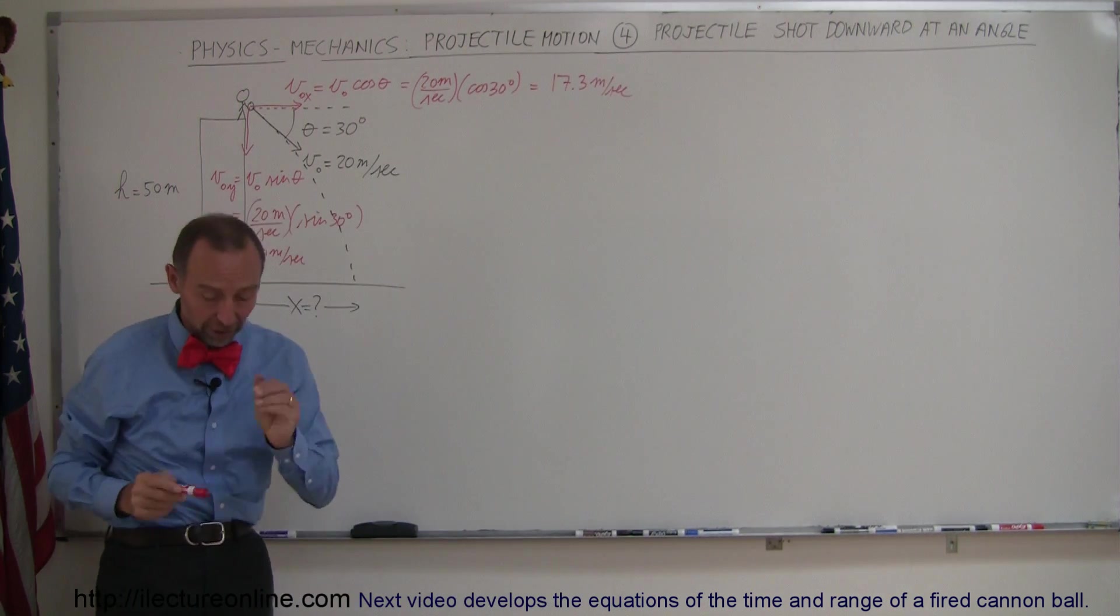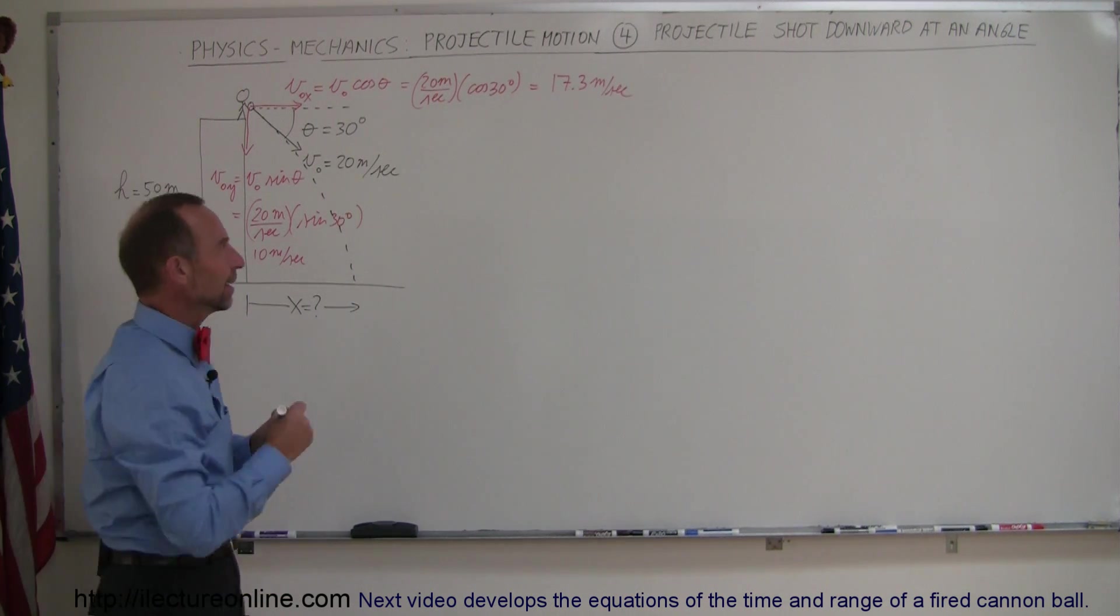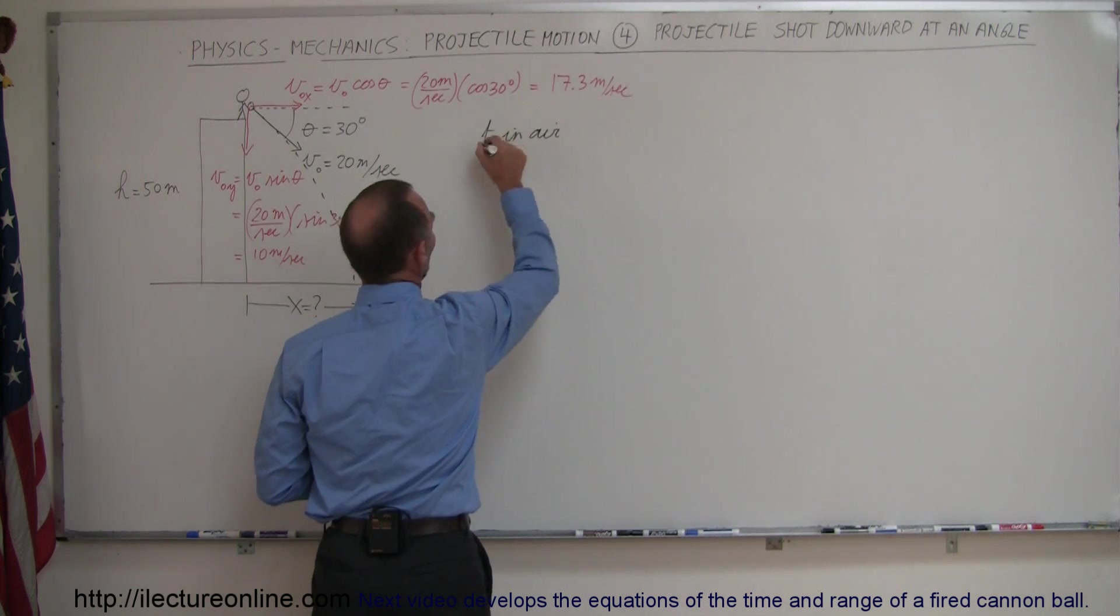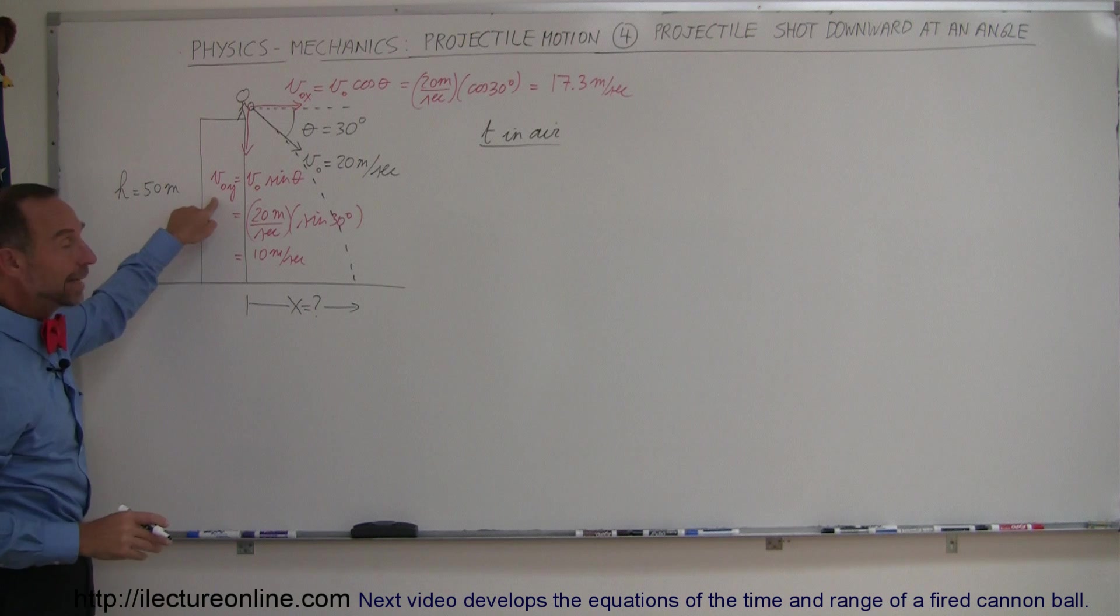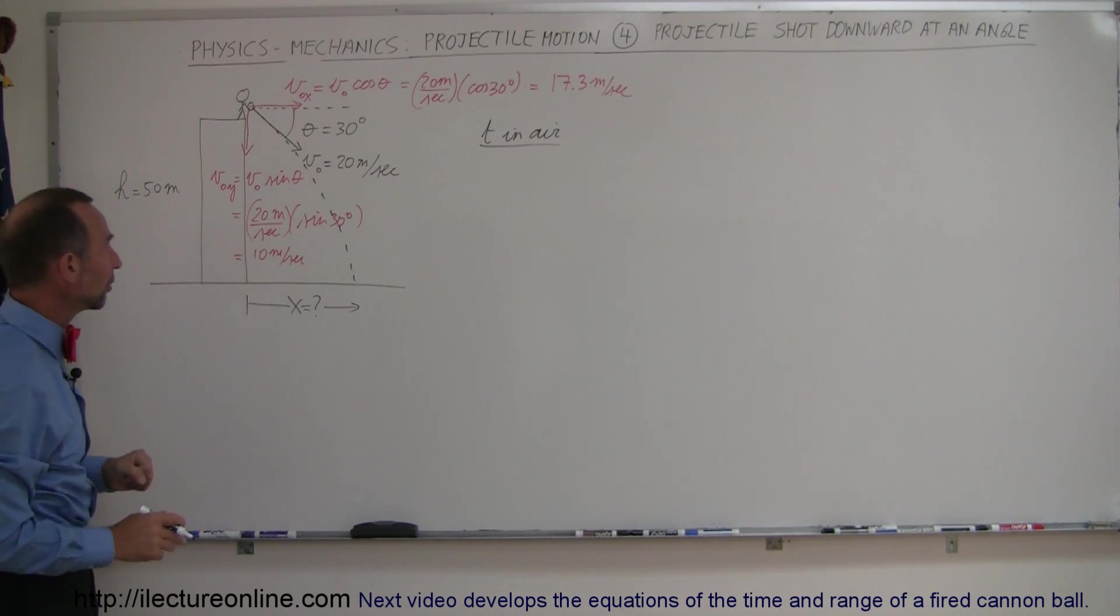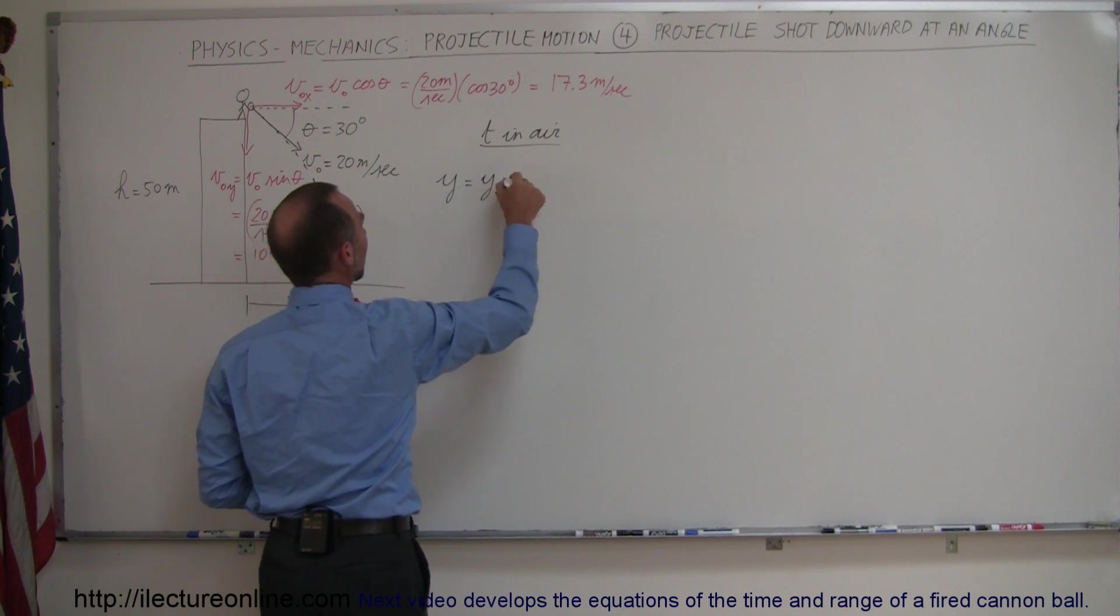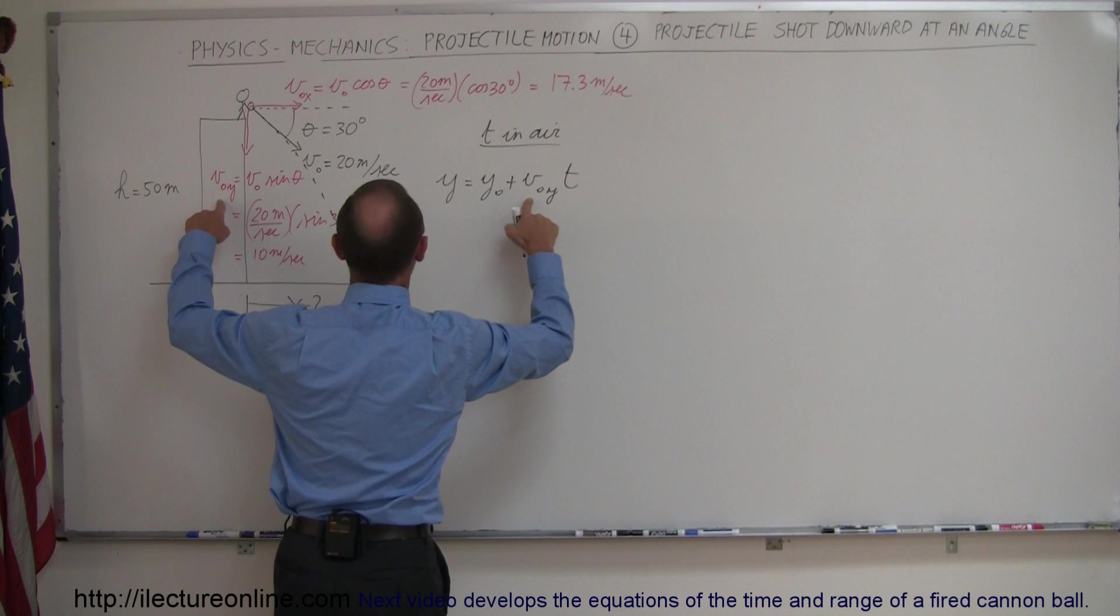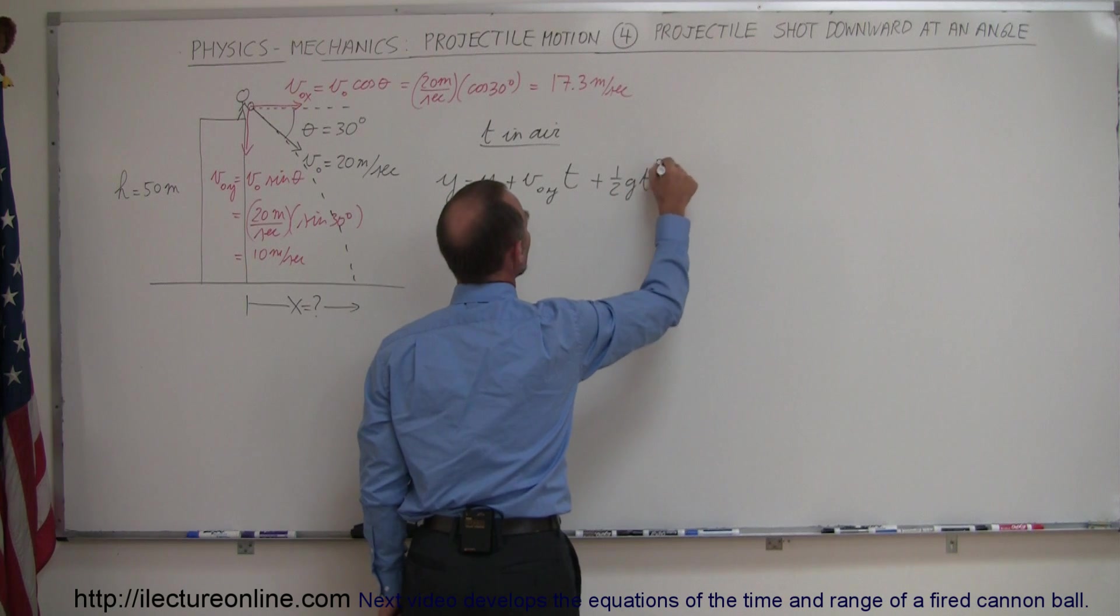All right, now that we have the initial velocity components in the x and y direction we can now find time in the air. So time in the air again is only dependent on the vertical motion, so we only are worried about the initial velocity in the y direction. We use this equation y equals y_0 plus v_0 in the y direction times time, so that's this velocity right here, plus one half g t squared.